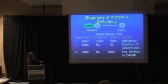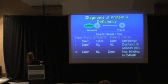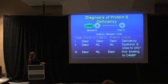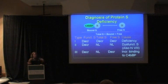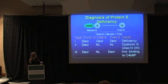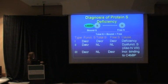Type 2 would be the dysfunctional protein S where you've got an abnormal functional level but normal total and normal free. You have to watch out for this pattern because you can have some abnormalities that interfere with the functional assay — like high factor 8 or factor 5 Leiden — which can make it falsely look like you have a low functional assay.